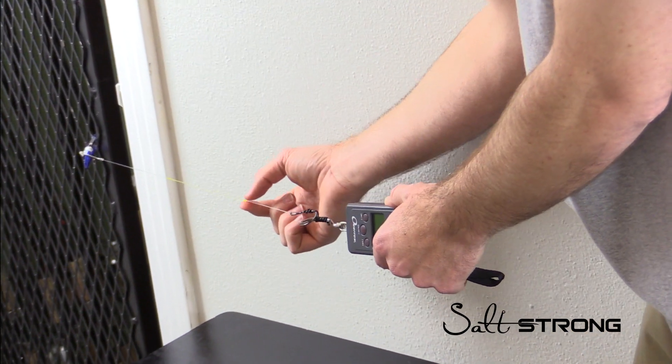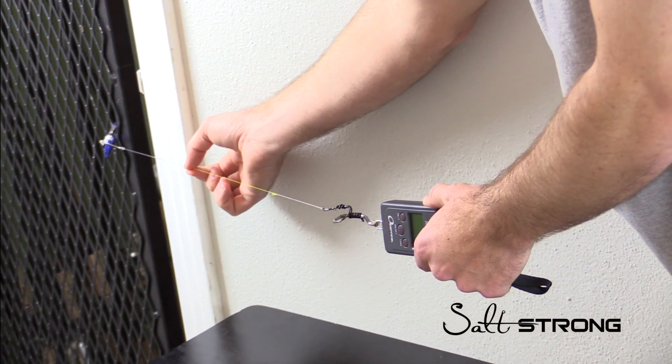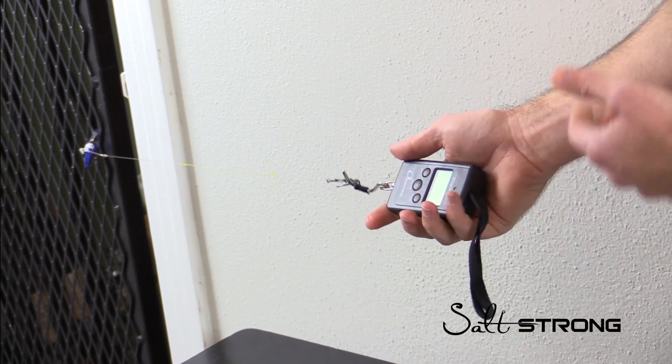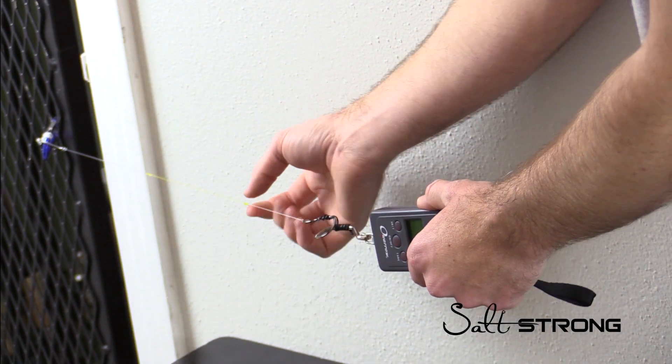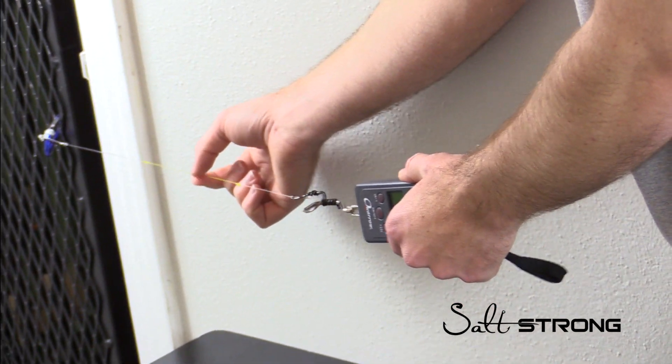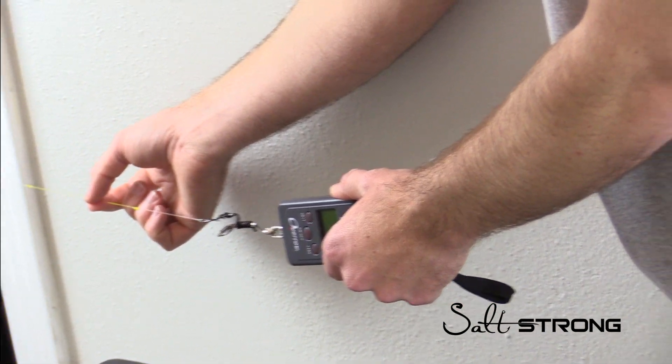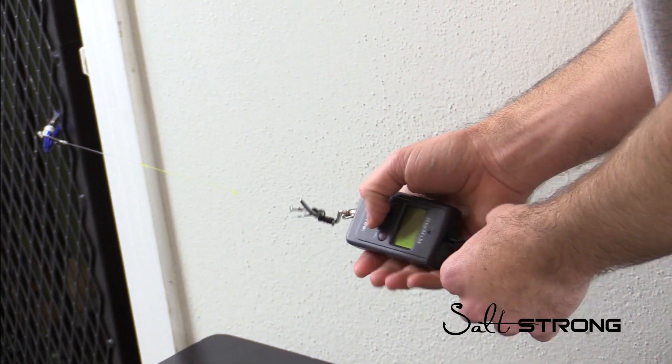So on this side we have the five-turn surgeon, on this side we have the FG knot, and I'm just going to pull on this entire strand until something breaks. Every time it'll break in one of the knots, and whichever knot has the actual braid on it after this is over is going to be the stronger one.